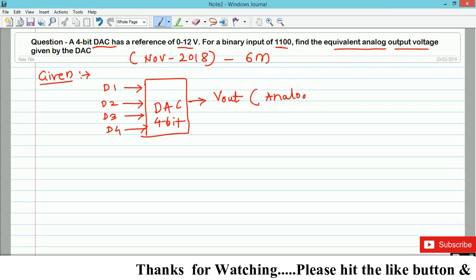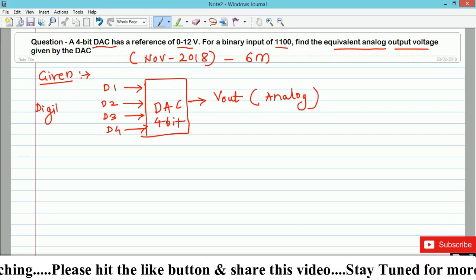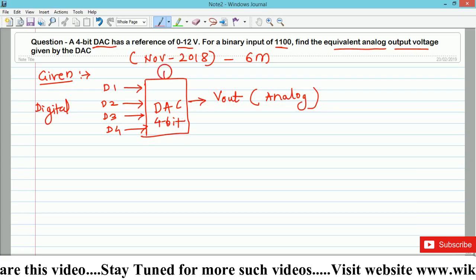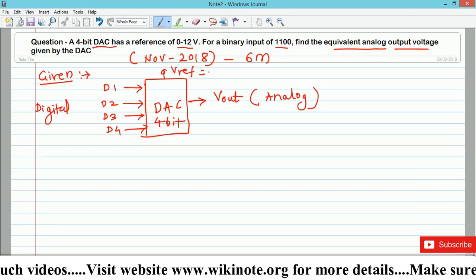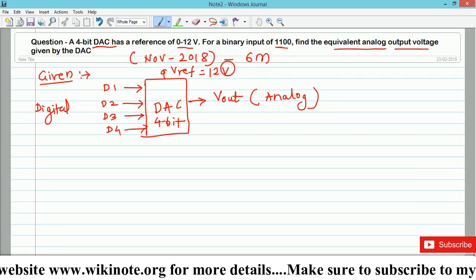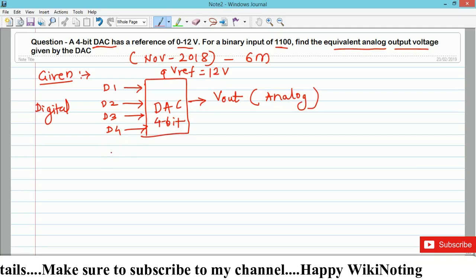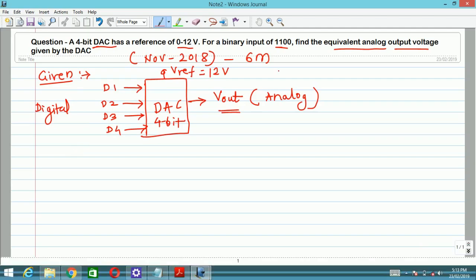This output voltage will be in analog form and the input part is digital. This DAC requires a reference voltage and that reference voltage is also given as 0 to 12 volt. How to solve this numerical and how to find out this Vout voltage? It's very simple. This is a very simple numerical and they have asked this for six marks.